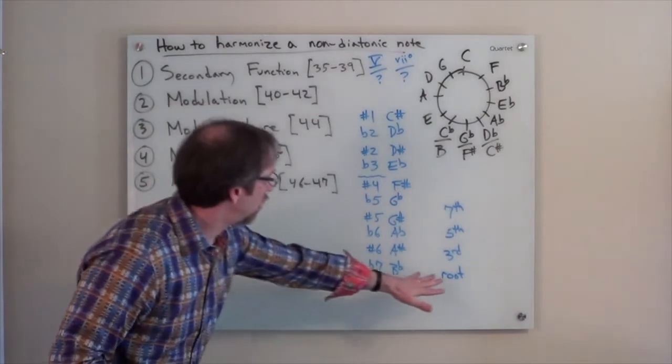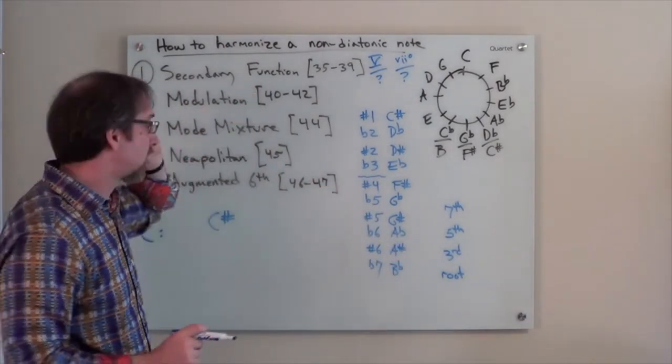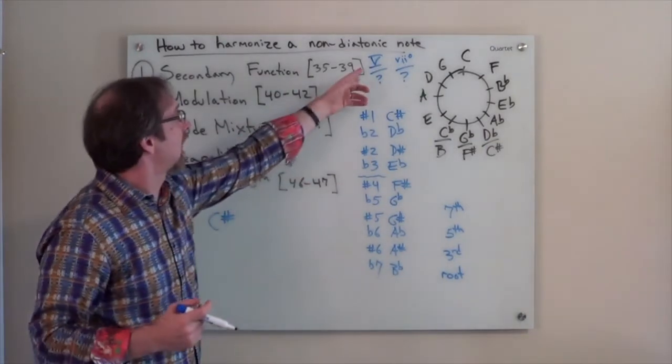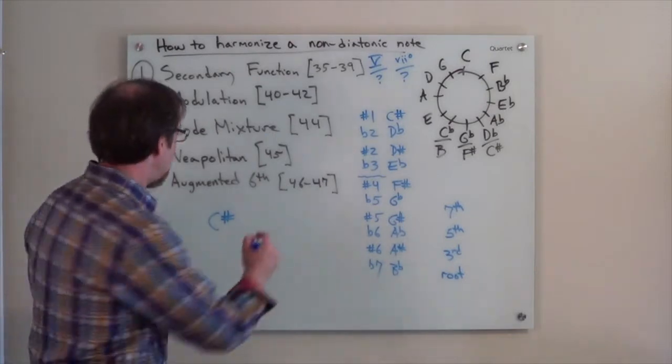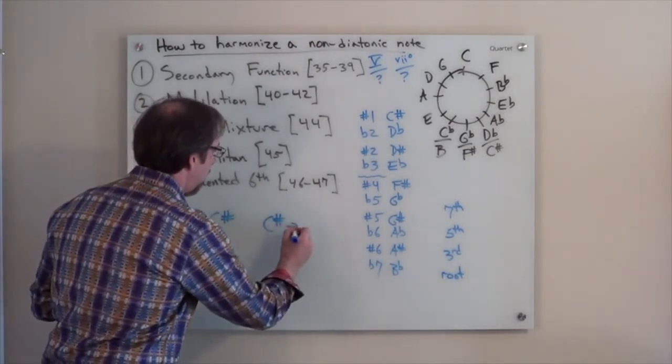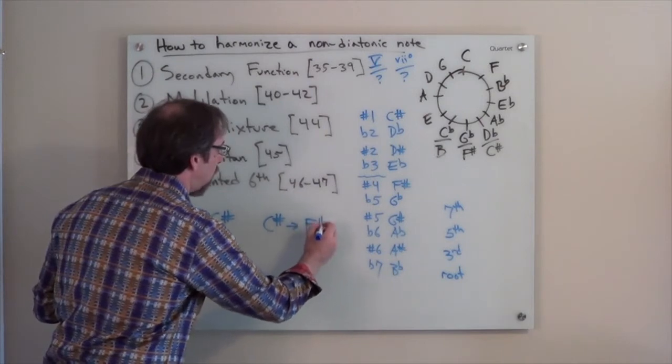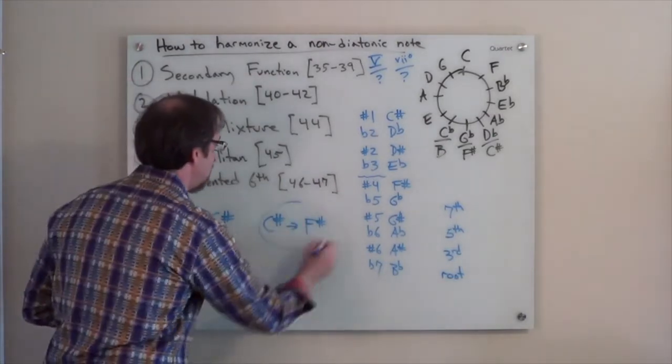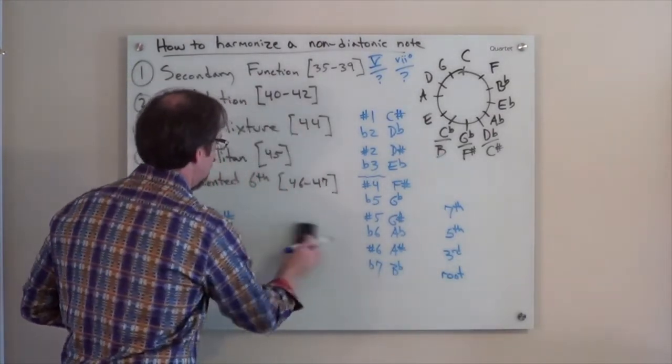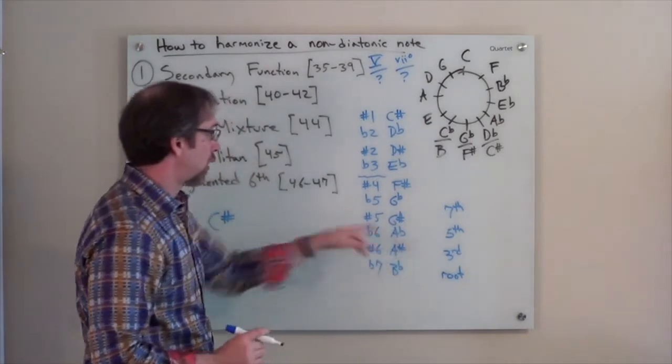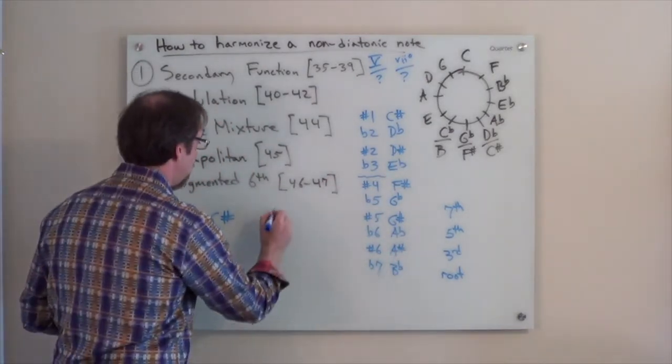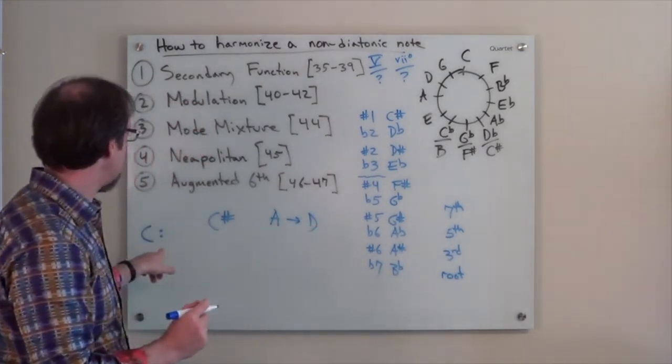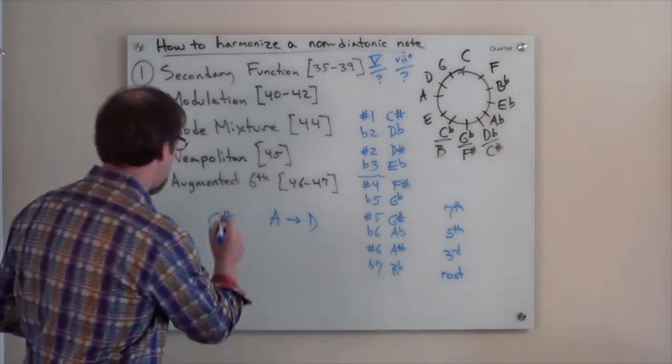So we can use that and just look at secondary functions and ask ourselves, if this C sharp was the root of, let's say, a five chord, five of something, that means it would be a C sharp major triad. That root would want to resolve down to an F sharp, but F sharp is not in our key of C major, so we can't do that. We can't have it be the root. Well, let's see if we can have it be the third. C sharp is the third of what major triad? The answer would be an A major triad. A would resolve down a fifth to D. Is D in our key of C major? Yes, it is. So here we have an option.